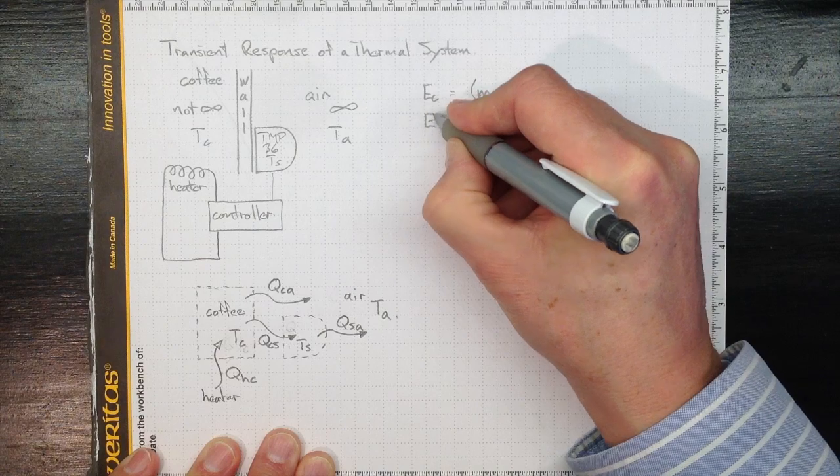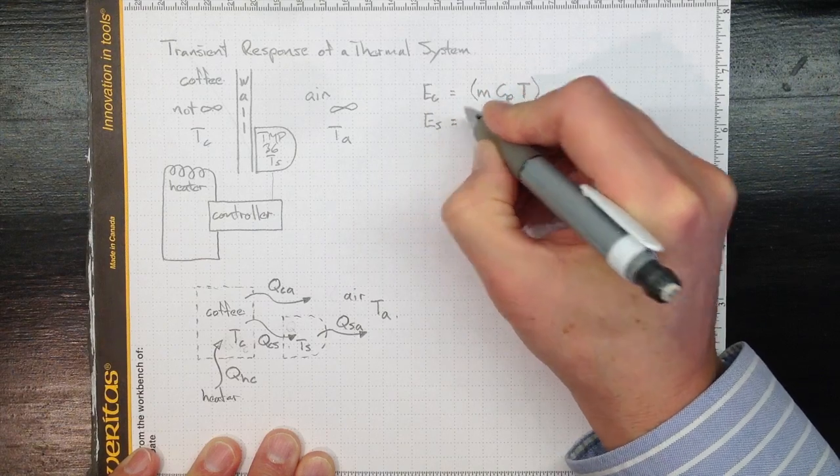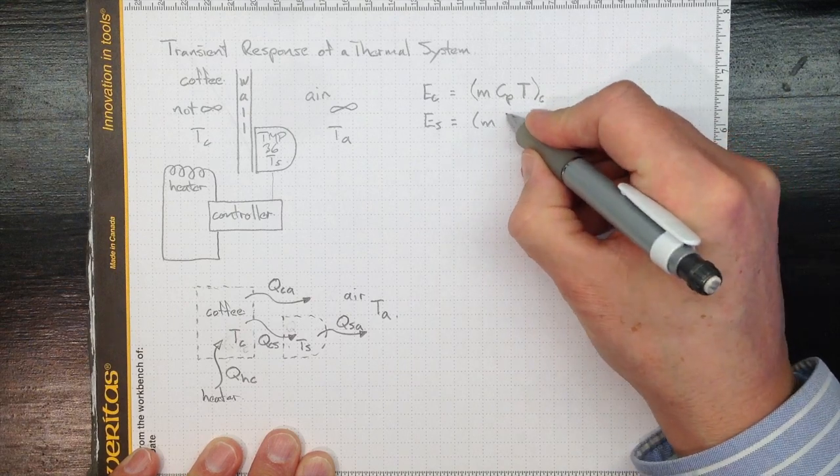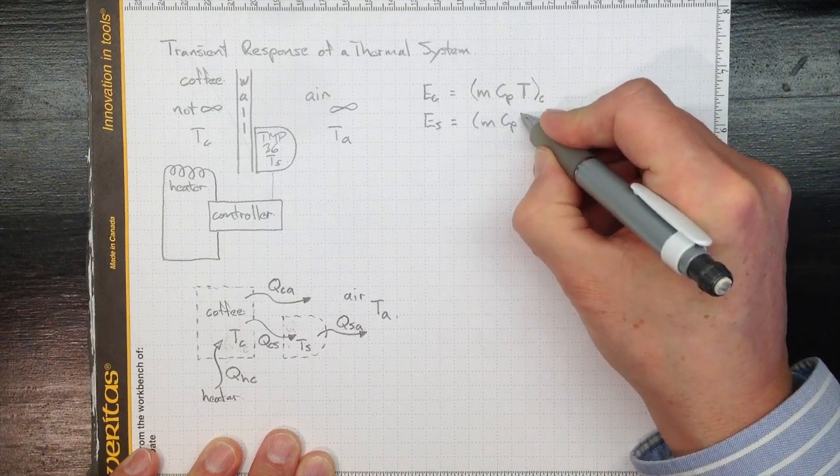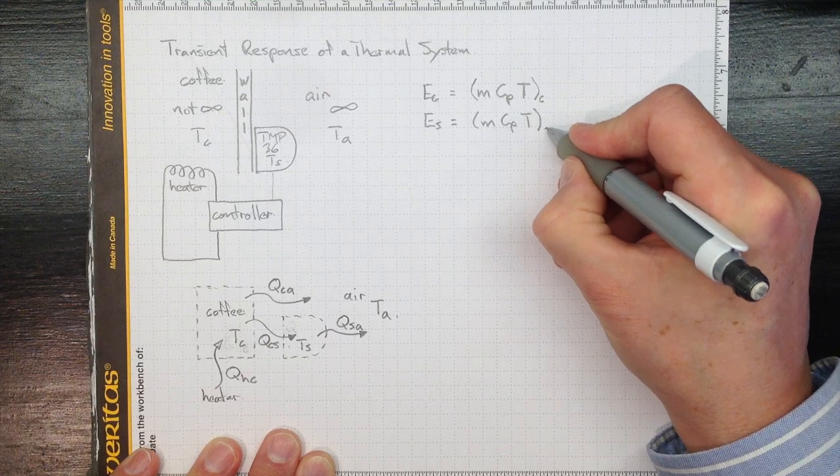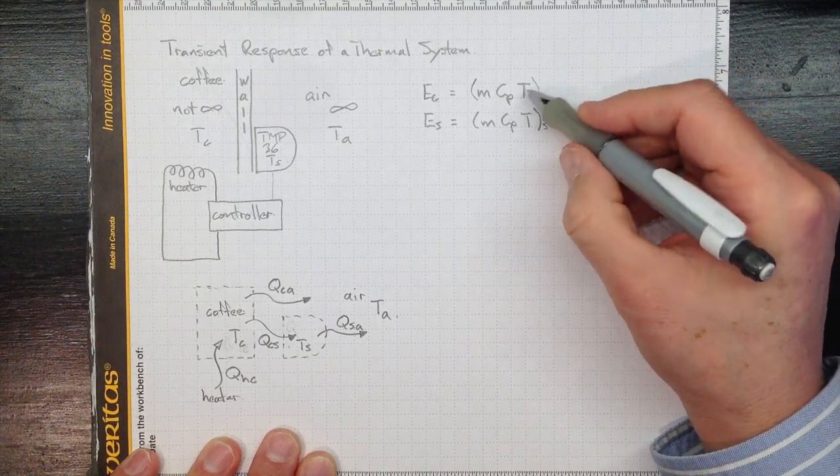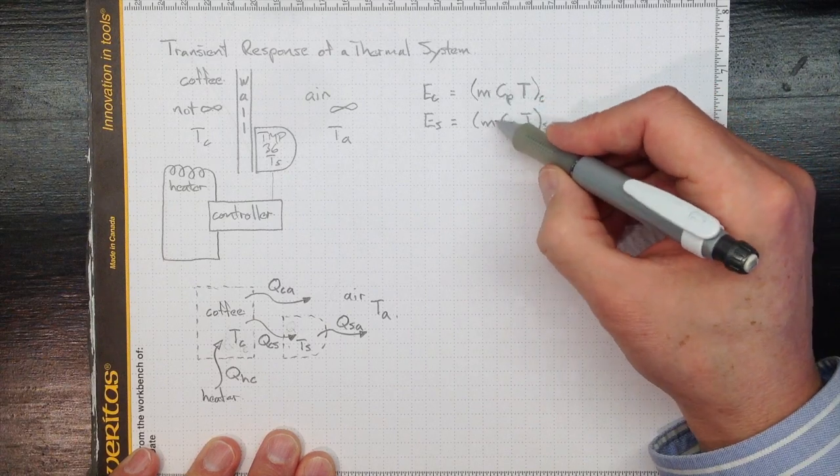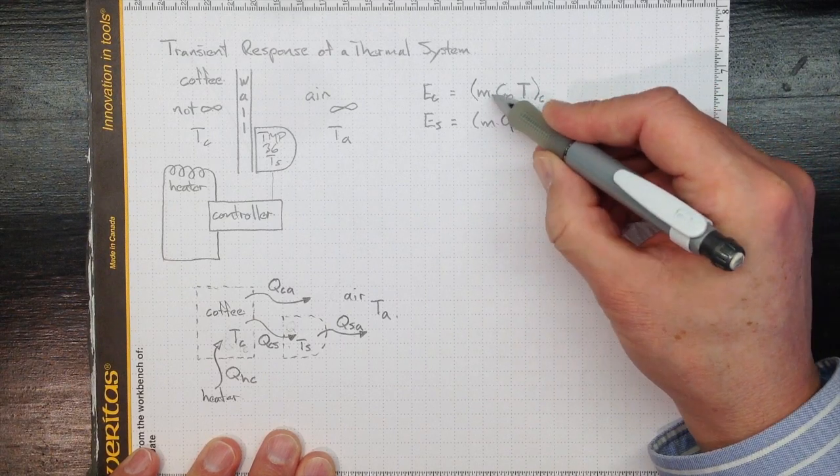Likewise we can look at the total amount of energy that's in the sensor and it'll be the mass times the specific heat times the temperature for the sensor. Now the specific heats will be similar, the temperatures are similar, and the masses are way different. The sensor's way smaller than the coffee.